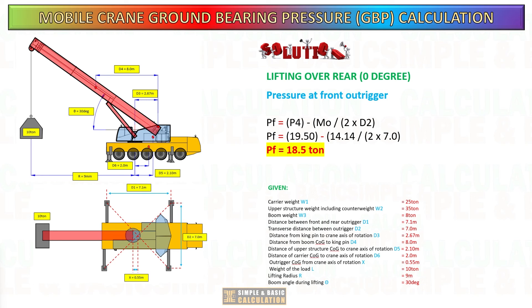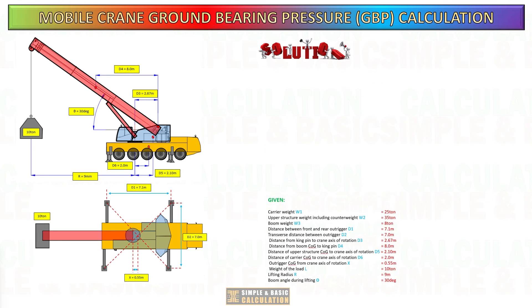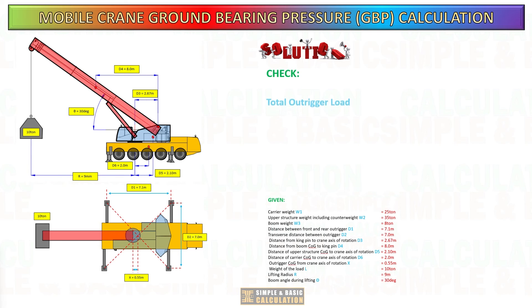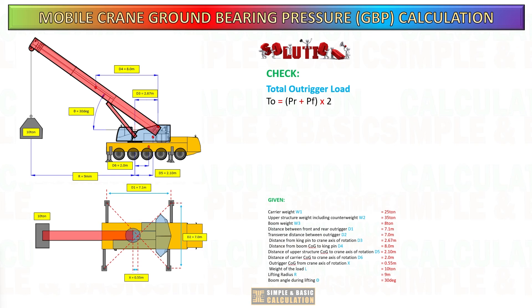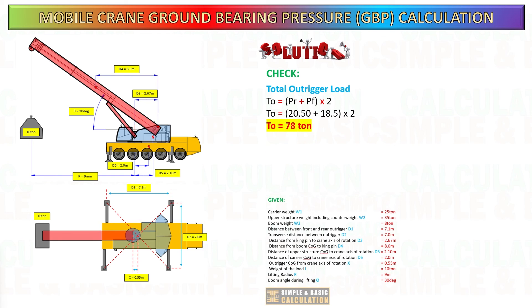Now to check if the result is correct: the total pressure must equal the total weight of the crane plus the load. To verify this, add the load at the front and rear outriggers and multiply by two.